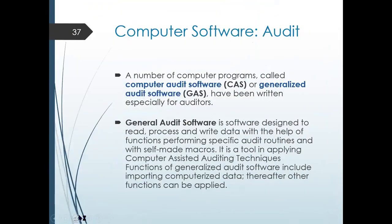Next, you have your computer software audit. There are a number of computer audit software and generalized audit software written especially for auditors. These software will help your audit of your CIS. If you are in a company running on a computer system, don't try to perpetrate fraud — because with the use of computer software today by auditors, it is easy to detect fraudulent transactions or material misstatements. What is your general audit software? It is a software designed to read, process, and write data with the help of functions performing specific audit routines and self-made macros.